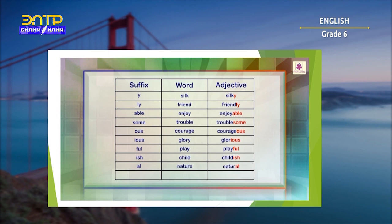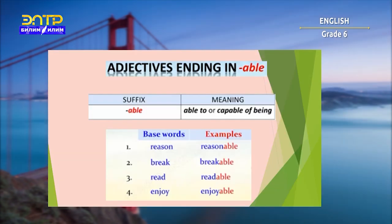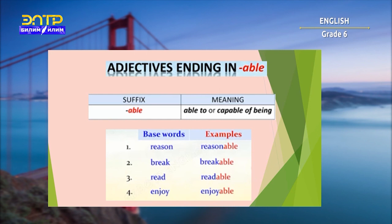Some adjectives end with suffix -LESS. For example: sense → senseless. The suffix -ABLE means 'able to' or 'capable of being.' Examples: reason + able = reasonable (able to reason), break + able = breakable (capable of being broken), read + able = readable (able to read), enjoy + able = enjoyable (capable of being enjoyed or giving pleasure).